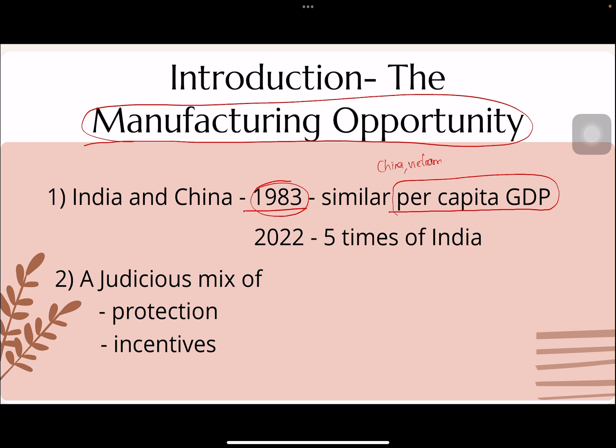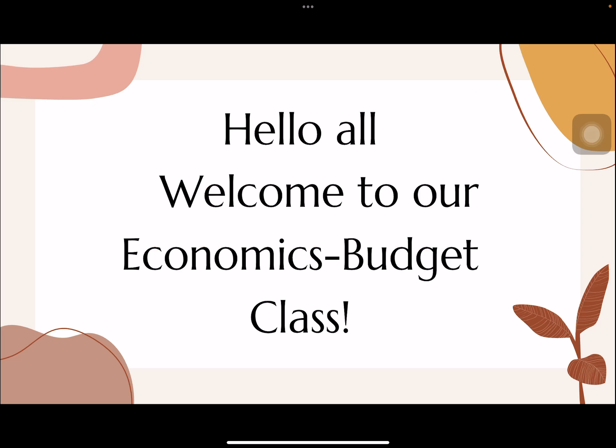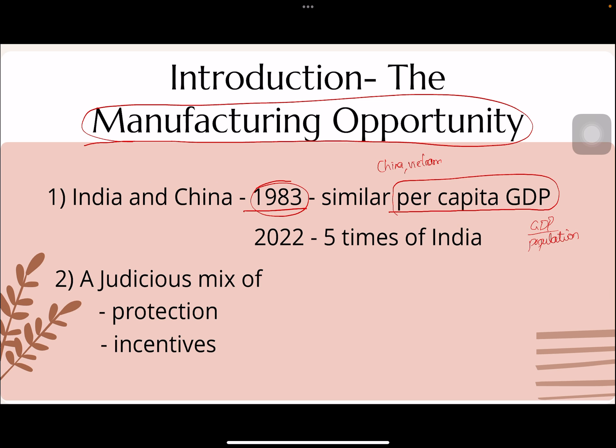We compare with China rather than Vietnam or Singapore because of population — to calculate per capita GDP we need total GDP and population. India and China are the two most populous countries in the world, and they also both got independence at roughly the same time. So in 1983, India and China had similar per capita GDP.